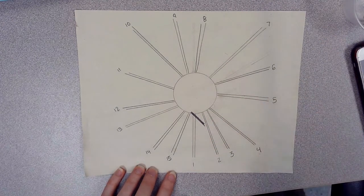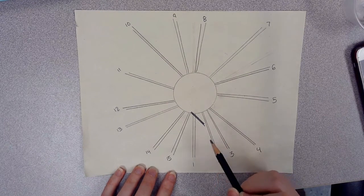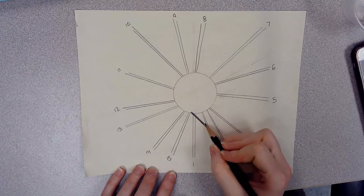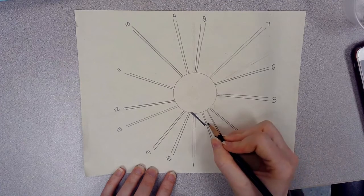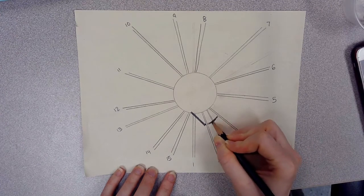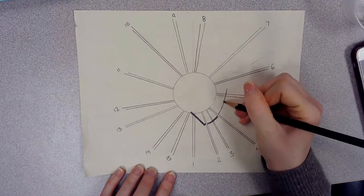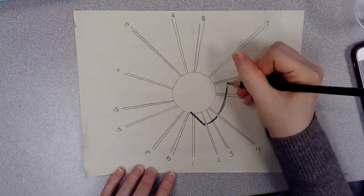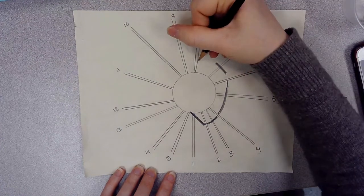You can choose what spoke one is on your own, but then it's going to go over, under, over, under, over, under all the way around the basket. So it's already over spoke one, so it's going to go under spoke two and then over spoke three, under spoke four, over spoke five, under spoke six, over seven, under eight, over nine.